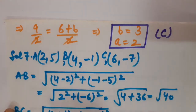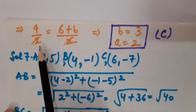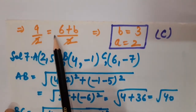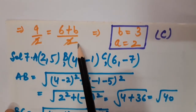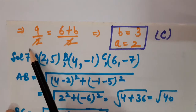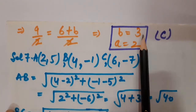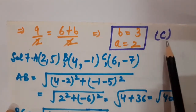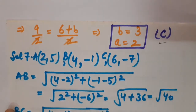Similarly, the ordinates must be equal: 9/2 = (6+B)/2. The 2s cancel, so B=3 and A=2. The right option is C.